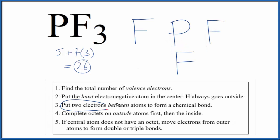Next we're going to put a pair of electrons between the atoms and that's going to form the chemical bond. So we'll put a pair of electrons between each fluorine and phosphorus atom. At this point we've used six valence electrons, we have 26.